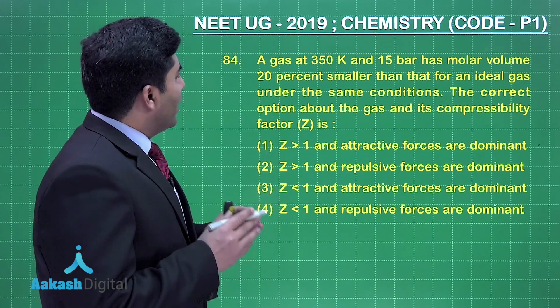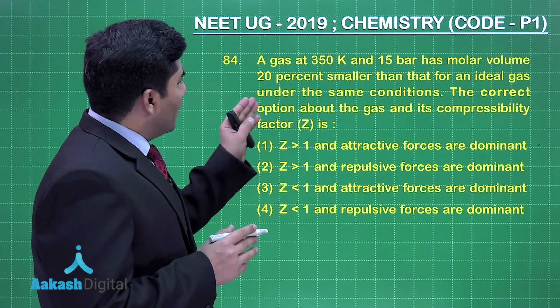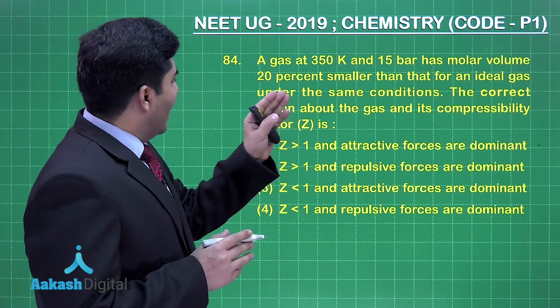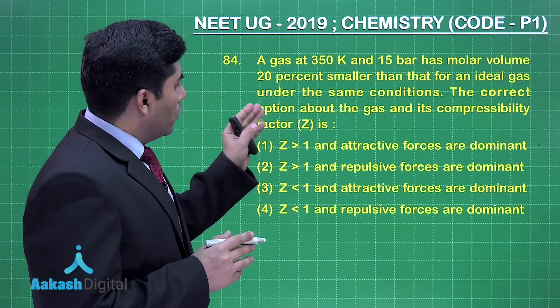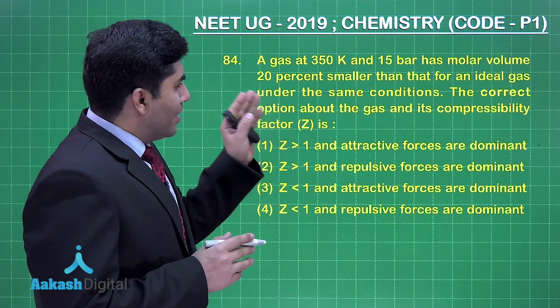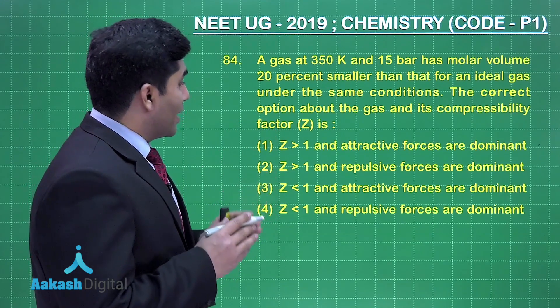Let's move on to the next question. A gas at 350K and 15 bar has molar volume 20 percent smaller than that of ideal gas under the same conditions. The correct option about the gas and its compressibility factor Z is given in four options.